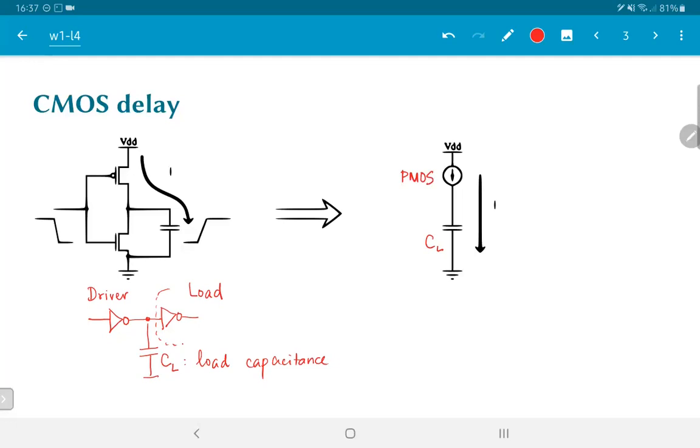Now in this figure we have shown it as a constant current source. In practice of course it is not a constant. It would depend on the actual supply voltage, the gate to source voltage and also the drain to source voltage, but as a rough approximation we can treat it as roughly constant to a first level of approximation.